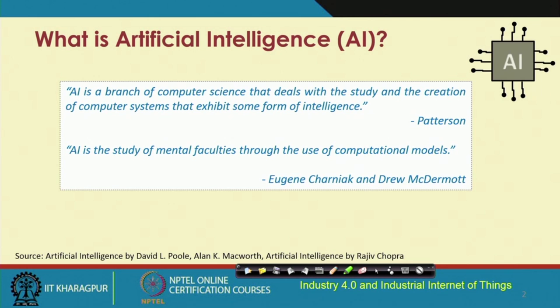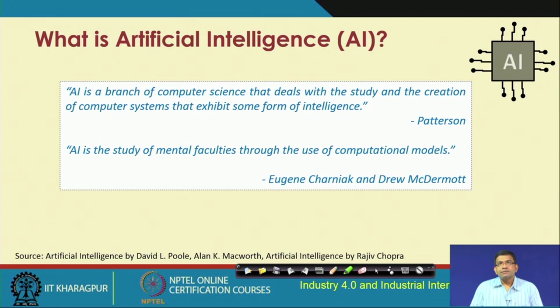What is artificial intelligence? There are different viewpoints as AI is quite broadly scoped and there are multiple definitions. As per one definition by Patterson, AI is a branch of computer science that deals with the study and creation of computer systems that exhibit some form of intelligence — intelligence very similar to the natural intelligence of human beings. So striving to build systems which can intelligently think and behave like human beings is what one definition of AI says.